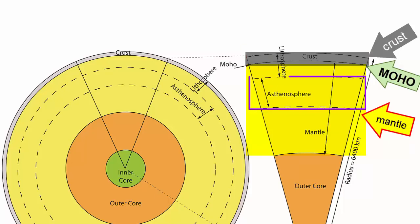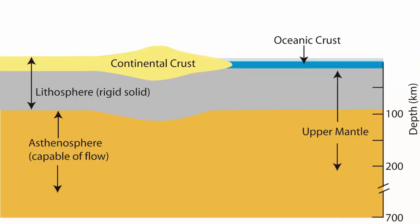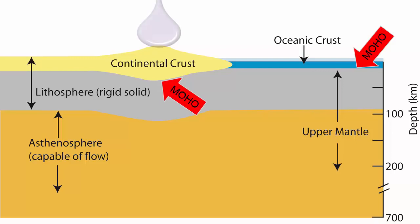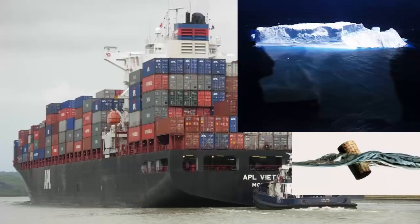Does the moho have anything to do with the asthenosphere? No. When we study the moho across the planet, it appears very close to the surface — at depths as low as 3 to 5 kilometers beneath the oceans — and as deep as 50 kilometers below the highest mountains. As material is added to or removed from the crust, it will adjust isostatically, again much like icebergs or ships in the ocean.